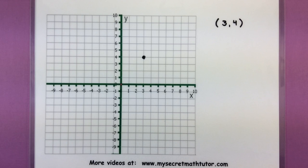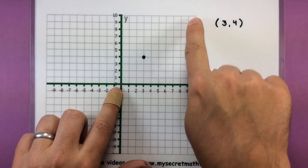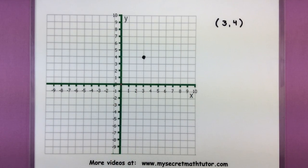Now with that point we can associate an angle and the way we do that is we take a ray that starts right at the origin and goes through this point. So let's go ahead and draw that right now.